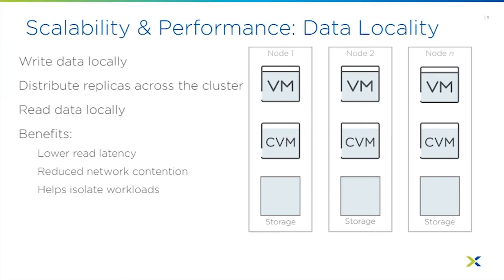Ideally, all the data stays local. When designing a Nutanix implementation for a database server, you want enough storage so the database data stays local — it never has to go out over the network to another node. This makes it faster than going out over Fibre Channel. With data locality, data stays on the internal storage of that same node, so there's no latency from going over the wire, even over a 10, 25, or 100 gigabit link.